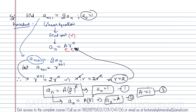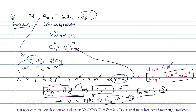Substituting A = 1 back into the solution: a(n) = 1·2^n = 2^n. This matches the result from back substitution. We solved this recurrence relation without back substitution by finding the root. We'll take a few more examples before moving on to second-order recurrence relations.